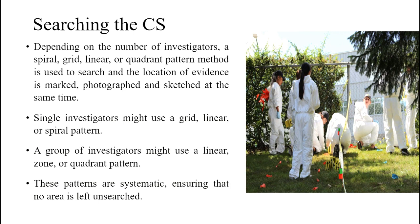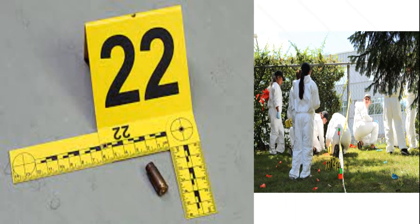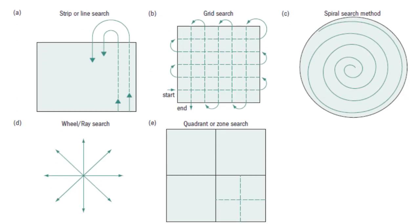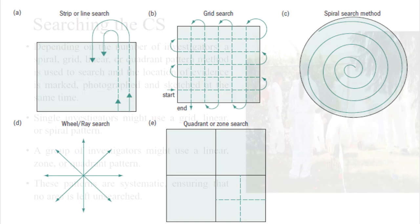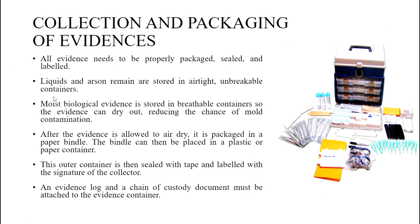After recording, the third step is searching the crime scene, which depends on the number of investigators present. Spiral, grid, linear, or quadrant pattern methods are used to search. If an evidence is found, its location is marked, photographed, and sketched. A single investigator might use a grid, linear, or spiral pattern, while a group of investigators might use a linear, zone, or quadrant pattern. These patterns are systematic, ensuring no area is left unsearched.